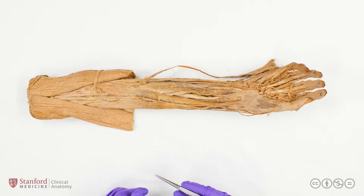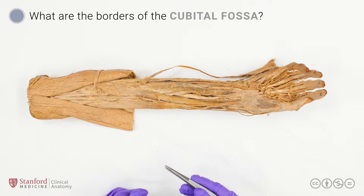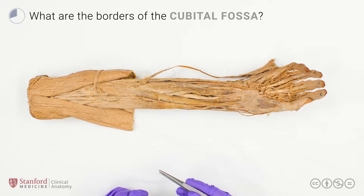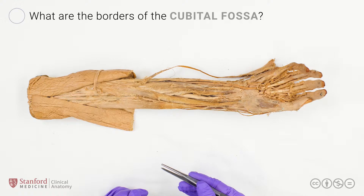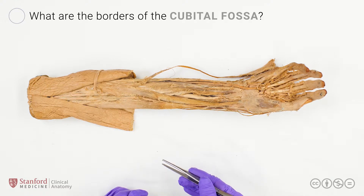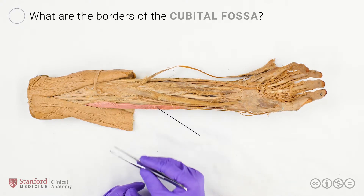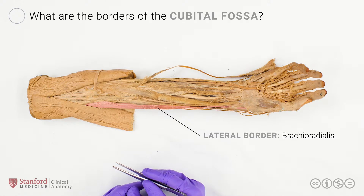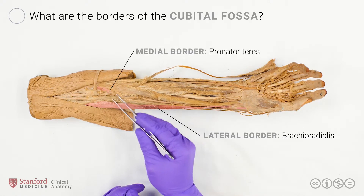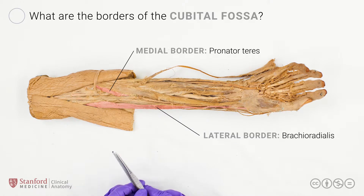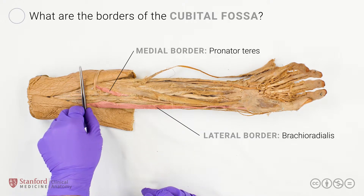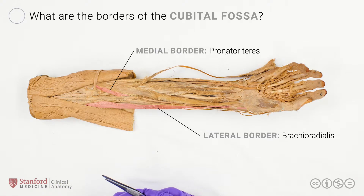Question 1: What are the borders of the cubital fossa? We can think of the cubital fossa as having three borders, a roof, and a floor. The three borders are laterally brachioradialis, medially pronator teres, and proximally a line between the epicondyles of the humerus.